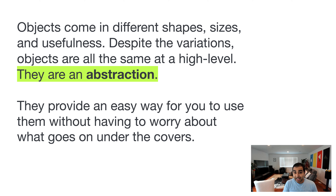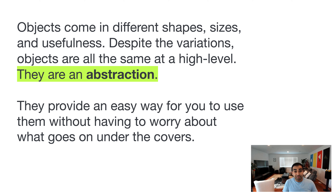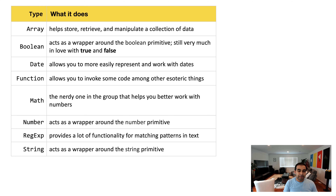An abstraction allows you to use objects in an easy way without really worrying about what happens under the covers. Do you really need to know all the little things that happen to a television in order to use it? No — as long as you know the big things exposed to you, you're good. You know how to turn it on and off, change the channel, change the volume. How exactly that happens under the covers involves a lot of complexity, but our need to understand it doesn't exist. In the JavaScript world, we have a bunch of objects that are the parallel siblings of the more primitive and built-in types we saw earlier.